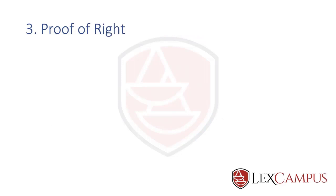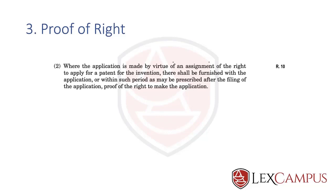The third thing you need to remember under section 7 is proof of right. Section 7.2 states that where an application is made by virtue of an assignment, the assignee — the second category of person — needs an assignment before they can file a patent application. This assignment is what we call a proof of right; it is usually an assignment deed which is created and filed before the patent office within the stipulated time.